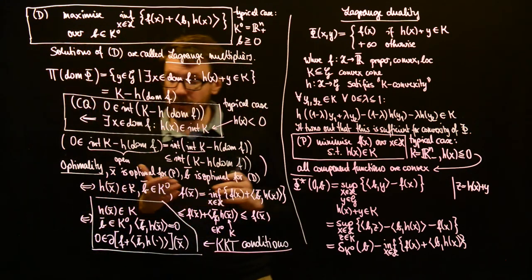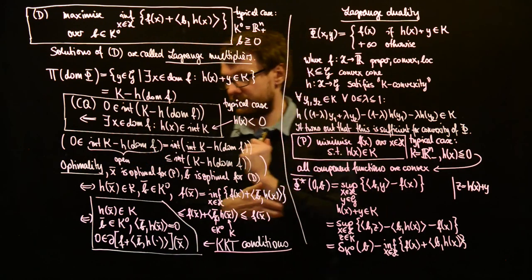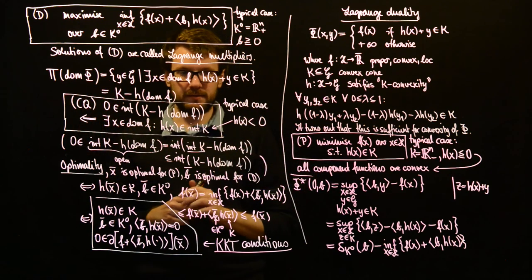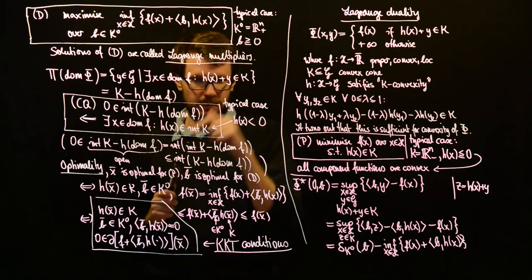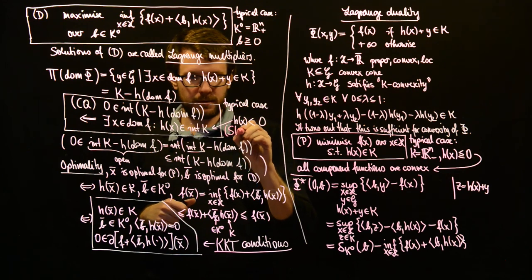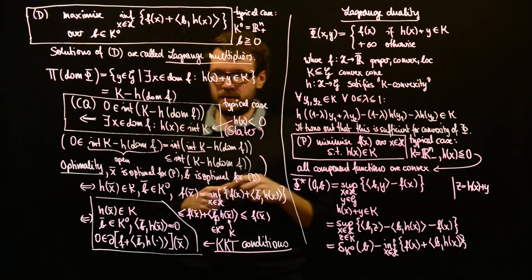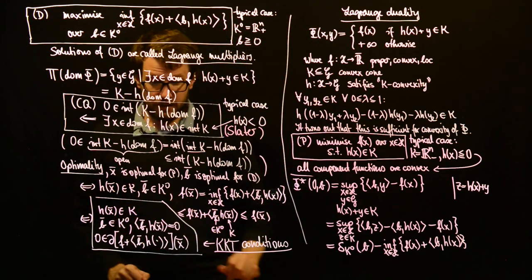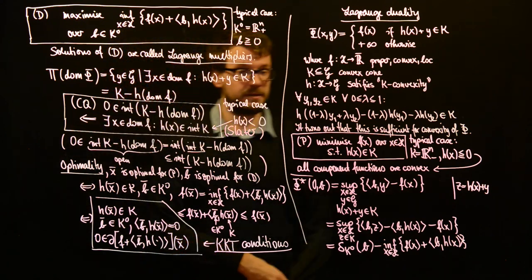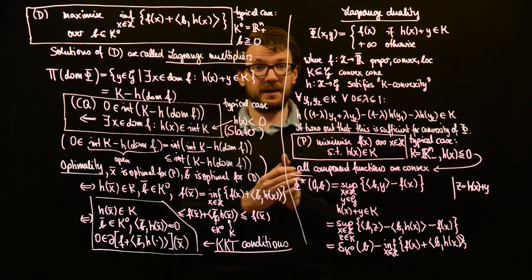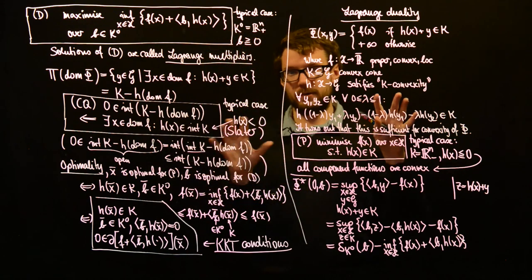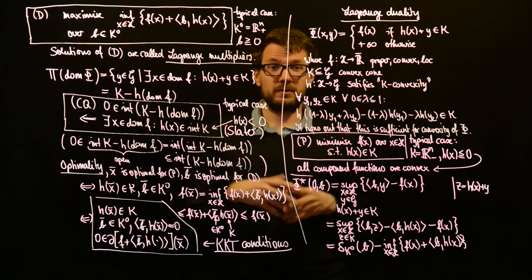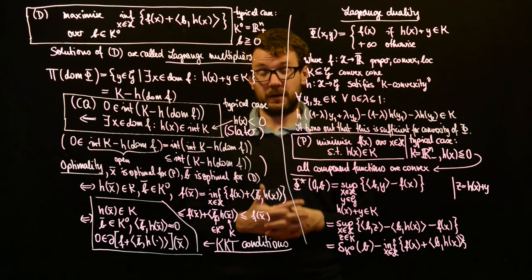In this convex setting, we do not need differentiability — we only need convexity and the Slater constraint qualification. This is the Slater condition in this case. These are the KKT conditions, and with that we have covered all the cornerstones of Lagrange duality as the special case of our general duality via perturbation functions.